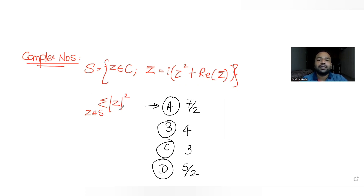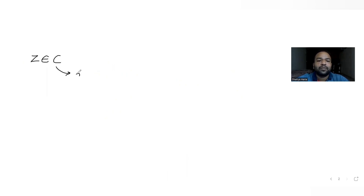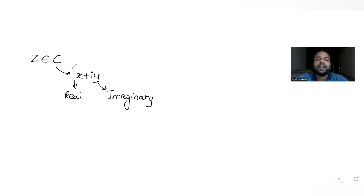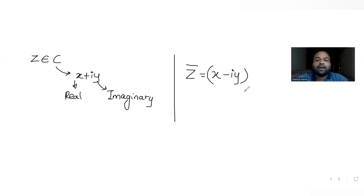To solve this, we know a complex number is always given by x plus i·y, where x is the real part and i·y is the imaginary part. So if z equals x plus i·y, then the conjugate of z becomes x minus i·y.